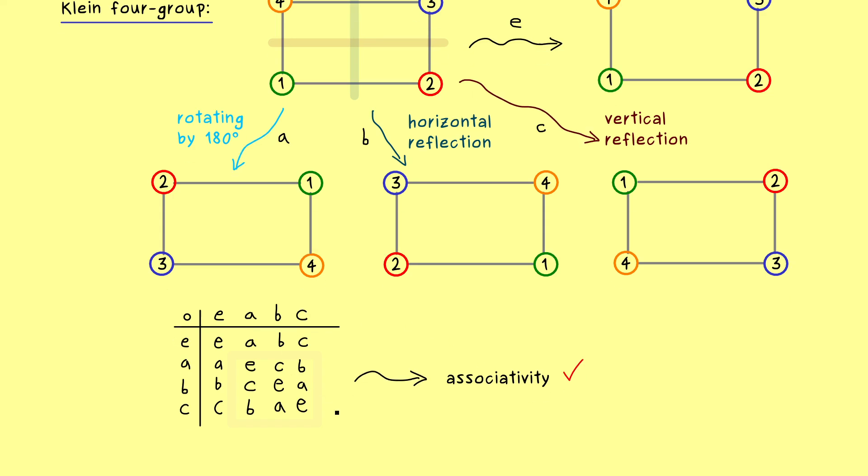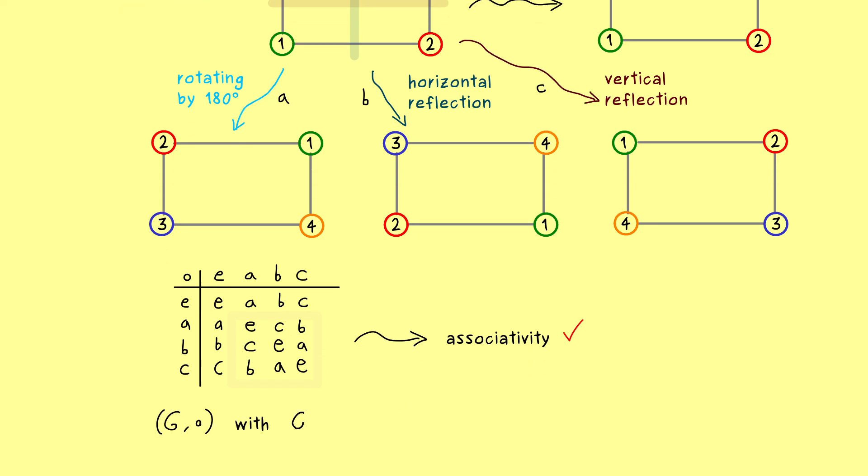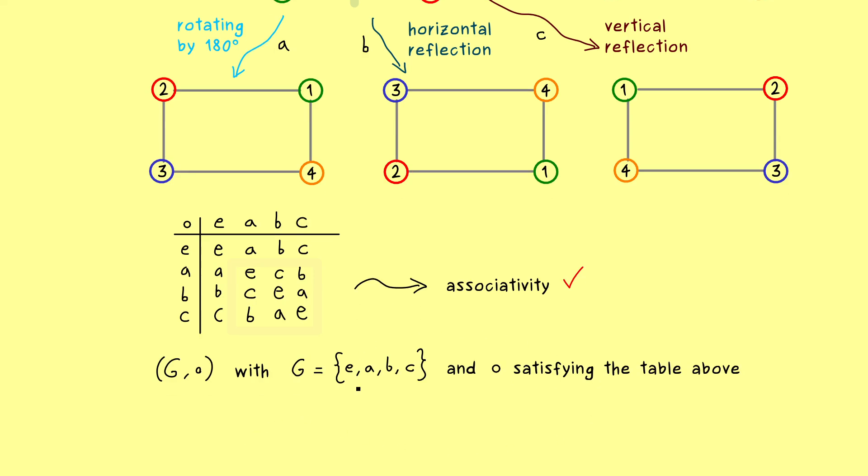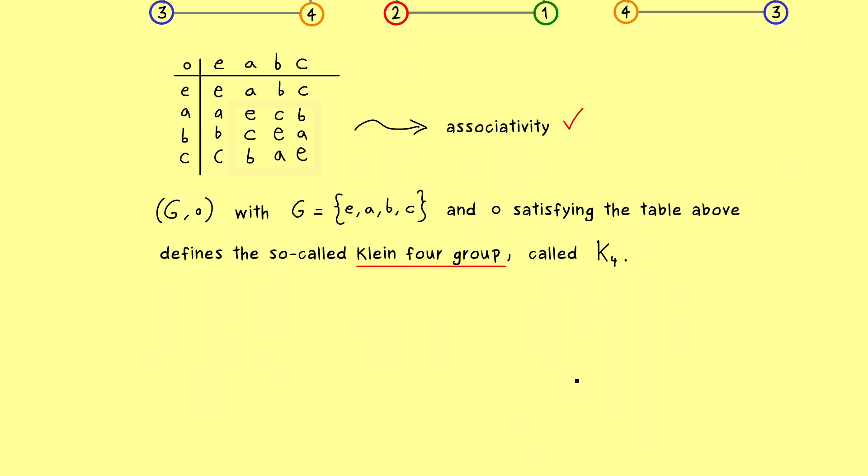So let's write this down as a short definition. So we have the set G with four elements, and the binary operation given by the table. And these two things together give us an abelian group called the Klein four-group. So it is of order four, and each element in it is its own inverse. Indeed, this is what we see here on the diagonal. And now one common notation for this abelian group is just K4. And you might already guess that we also want to talk about the possible subgroups of K4. And in order to do that, we can use the proposition from above.